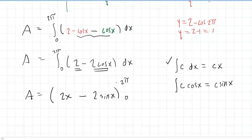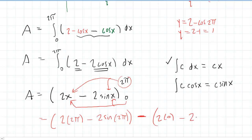You'll recall the way to proceed from this point is to take the upper bound and plug that in for all of the x values first. So we're going to have 2 times 2π minus 2 sin 2π. Then we subtract the value we get by plugging in the lower bound next. So then we'll have 2 times 0 minus 2 times the sine of 0.